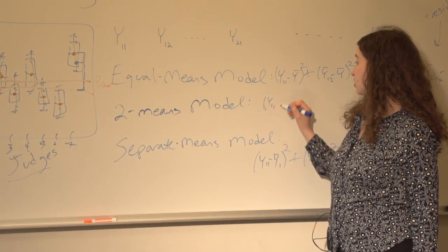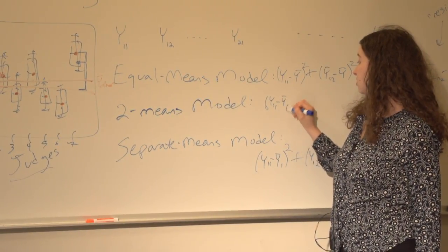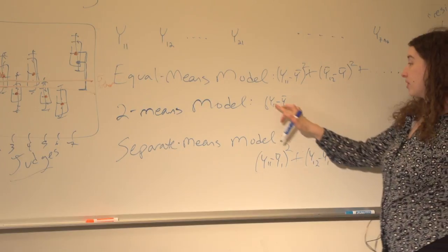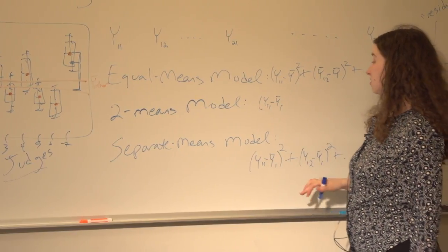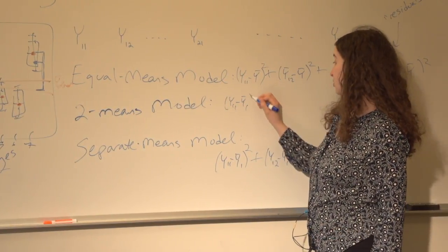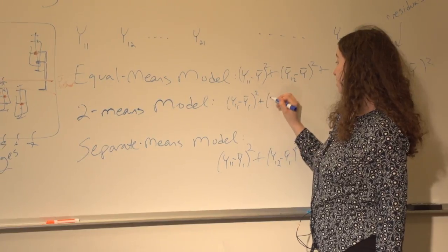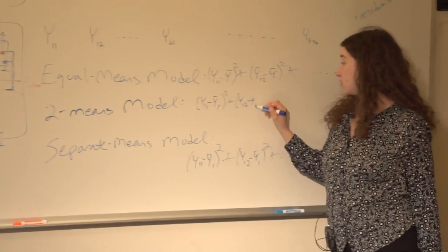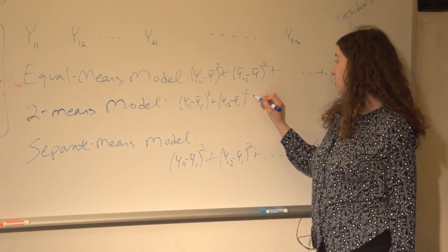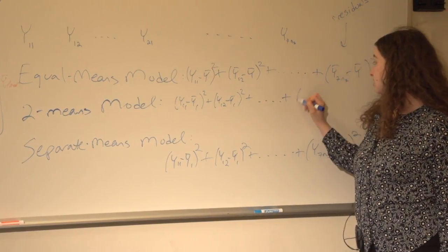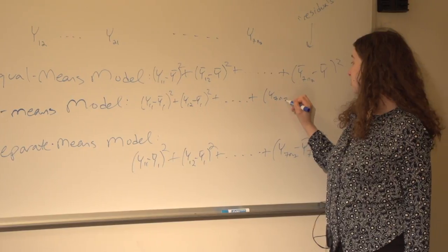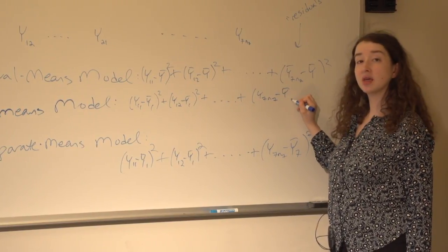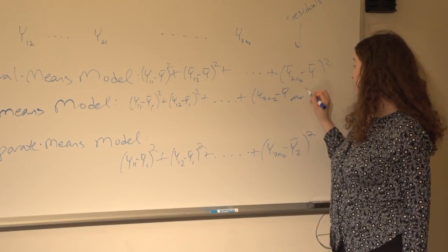So how would I calculate the residuals then? Well, the first value in the first judge would be compared to y bar 1, the mean of the values in the first group. And the second value in the first group would be compared to y bar 1. But all the other values are going to be compared to this overall mean of the values from judges 2 through 7.